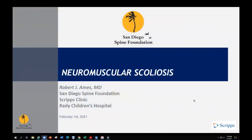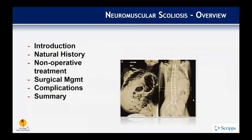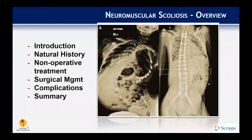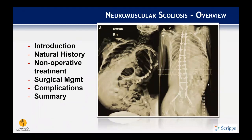Neuromuscular scoliosis — this is going to be kind of a whirlwind, big topic, but we'll try to hit the high points. Starting with natural history, non-operative treatment, surgical management, and complications — that's going to be the overview of what we're going to talk about.